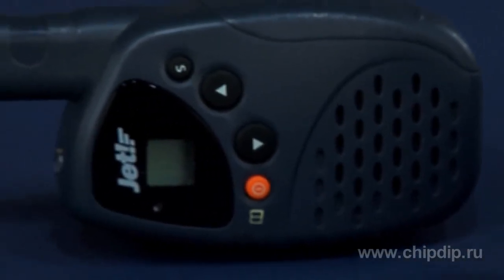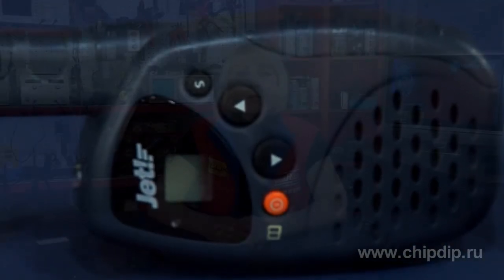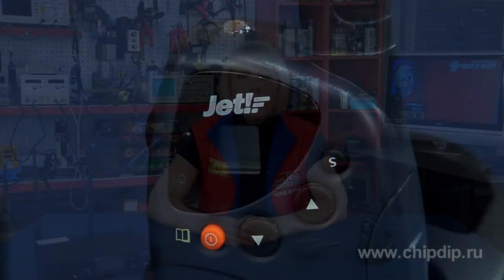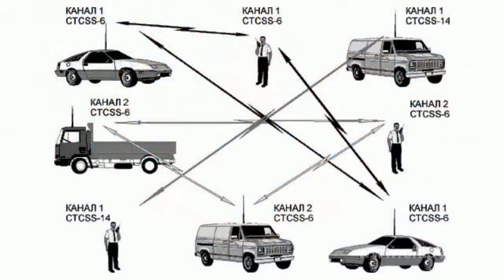However, they can hear you. In case you use a repeater, the repeater is closed with a code. To use it, you need to pre-enter the same code into your walkie-talkie. So this is in principle not just a system for noise reduction — it's more of a service function allowing two parties or a whole group to use the portable radio transmitter on a busy channel without hearing the conversations of others.